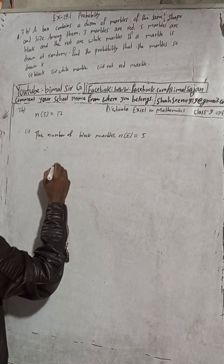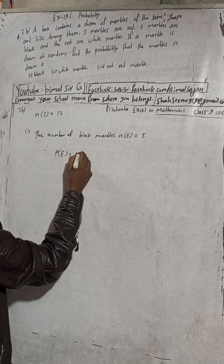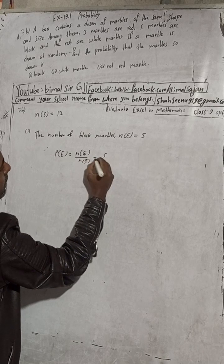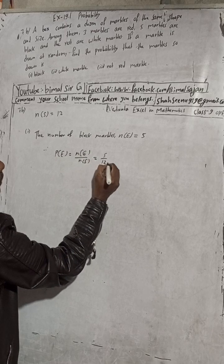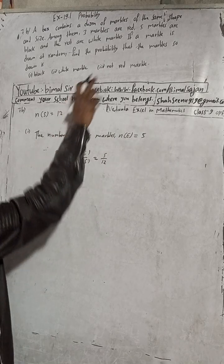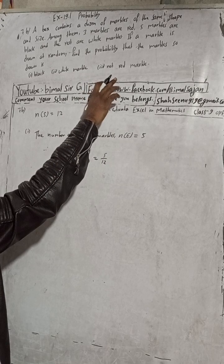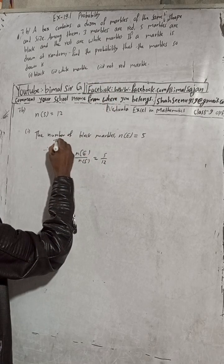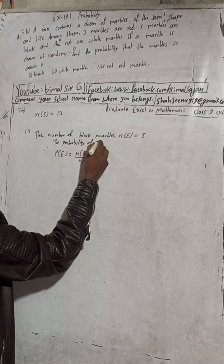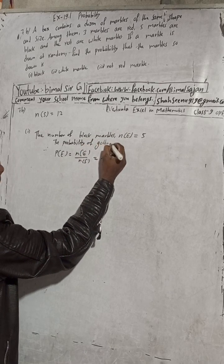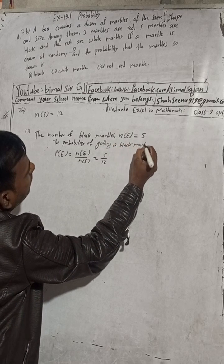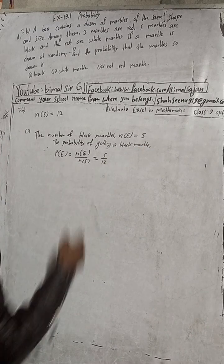Therefore, P(E) = n(E) / n(S) = 5/12. The probability of getting a black marble P(E) is equal to 5/12. In the book the answer is five by twelve, which is correct.